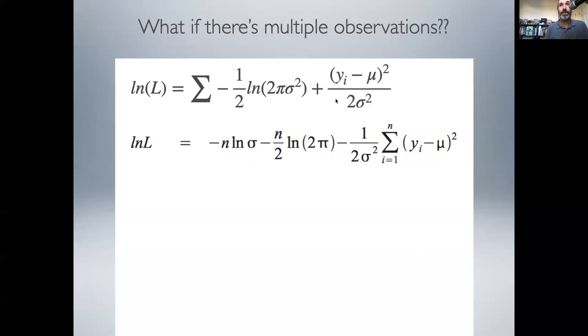And now I have a sum over this term, I can factor the two sigma squared in the denominator out. And I just get left with the sum of yi minus mu squared.